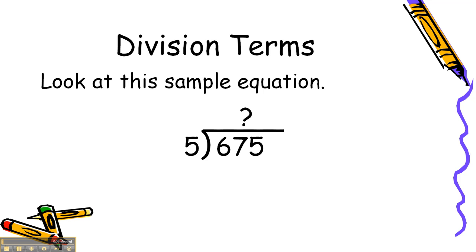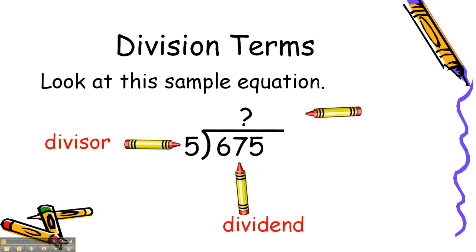First of all, let's start with the terms so we know what we're doing. Look at this sample. The number outside the division box is called the divisor. The number inside is called the dividend. The number that is being built on top is the answer, and we call it the quotient.